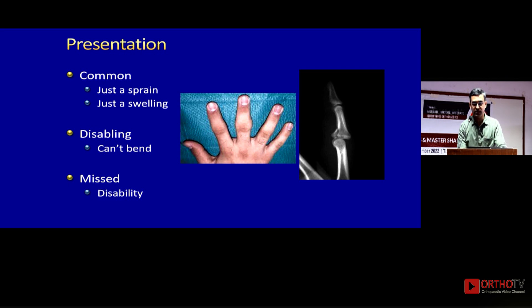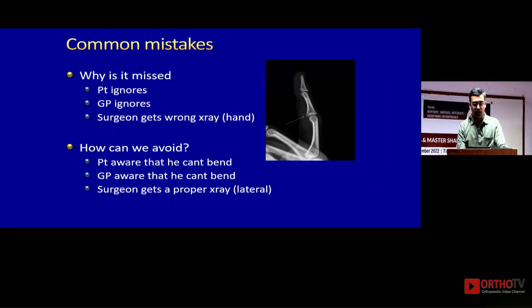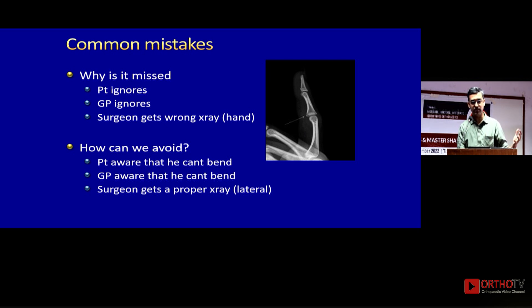This is very disabling because the patient is unable to bend the PIP joint, and if you miss treating it the patient has a significant disability. We miss it because the patient ignores just a finger, the family doctor ignores it, and when it comes to us we may end up taking the wrong x-rays. We can avoid this by informing the patient to try and bend — if they're unable to, get an x-ray done. Don't delay.